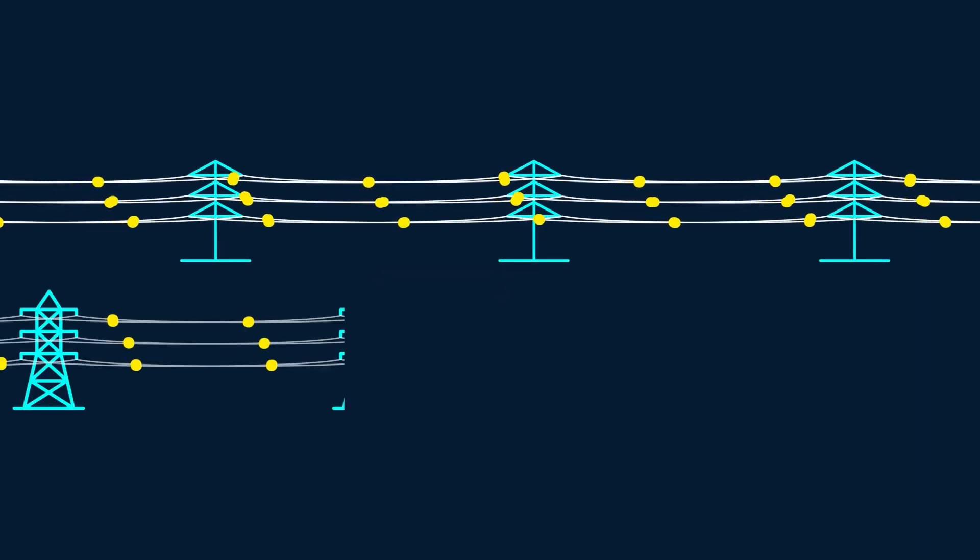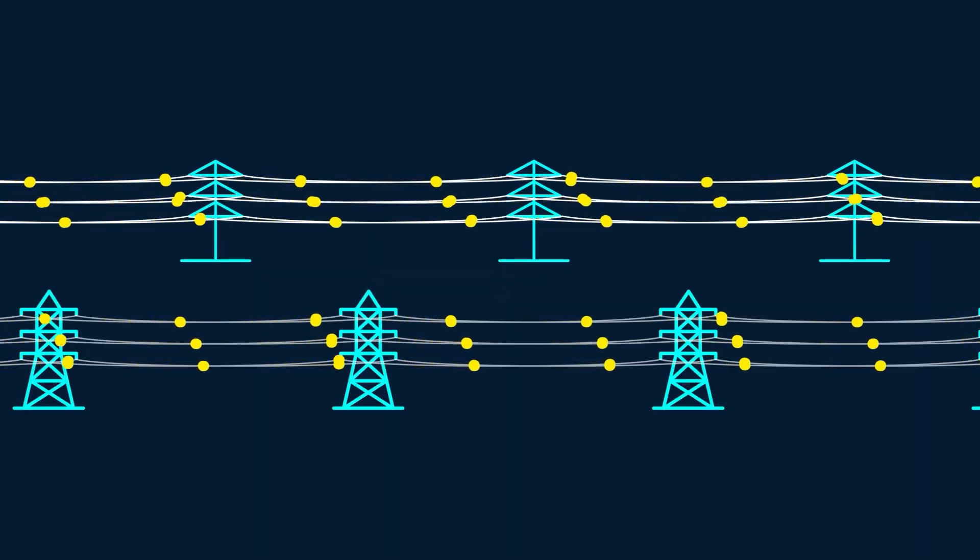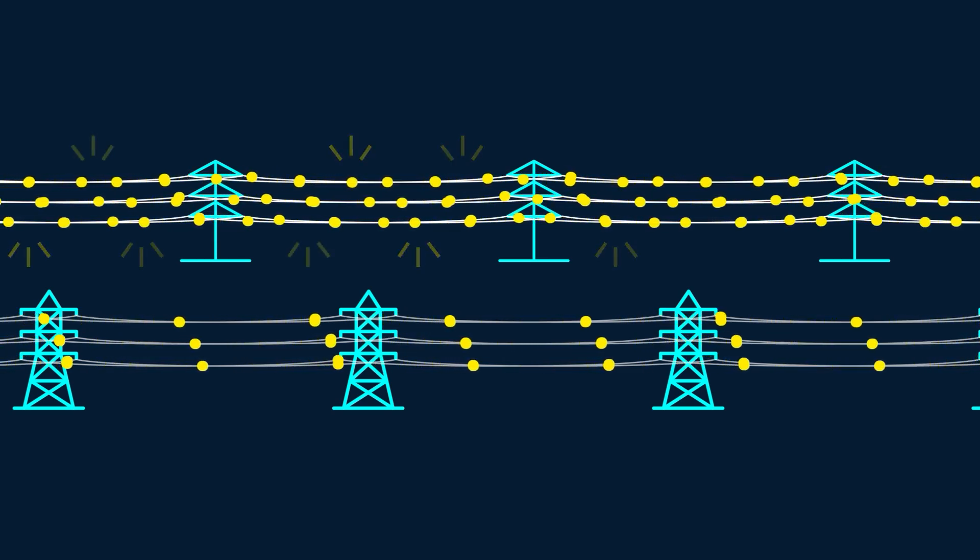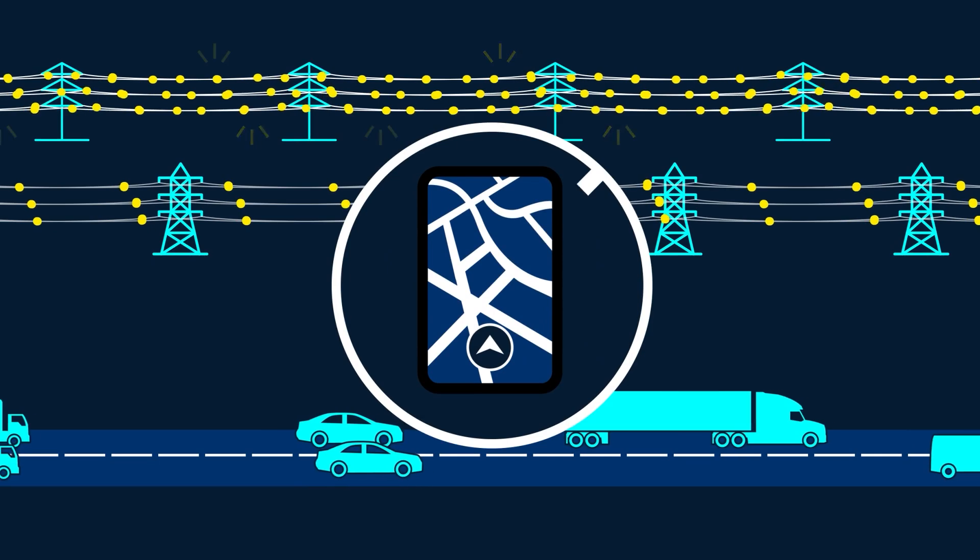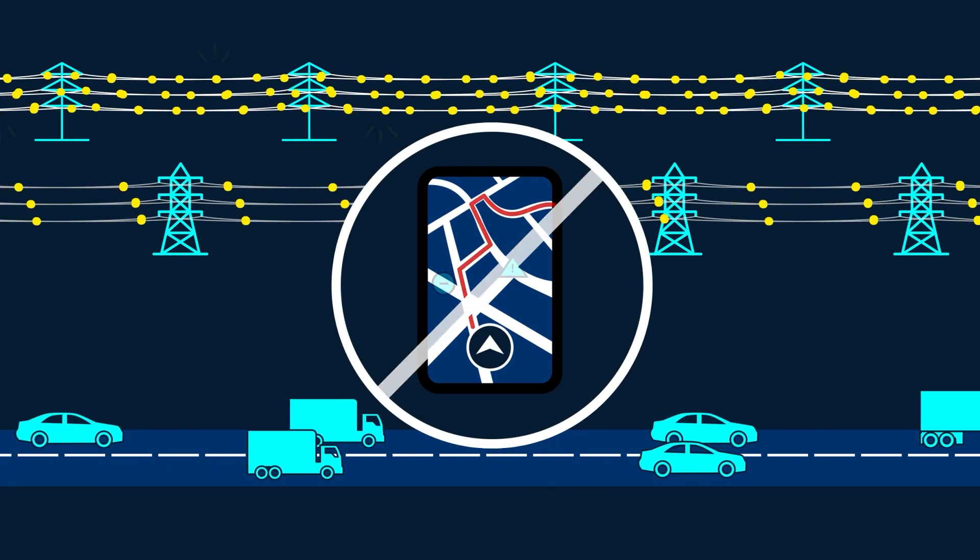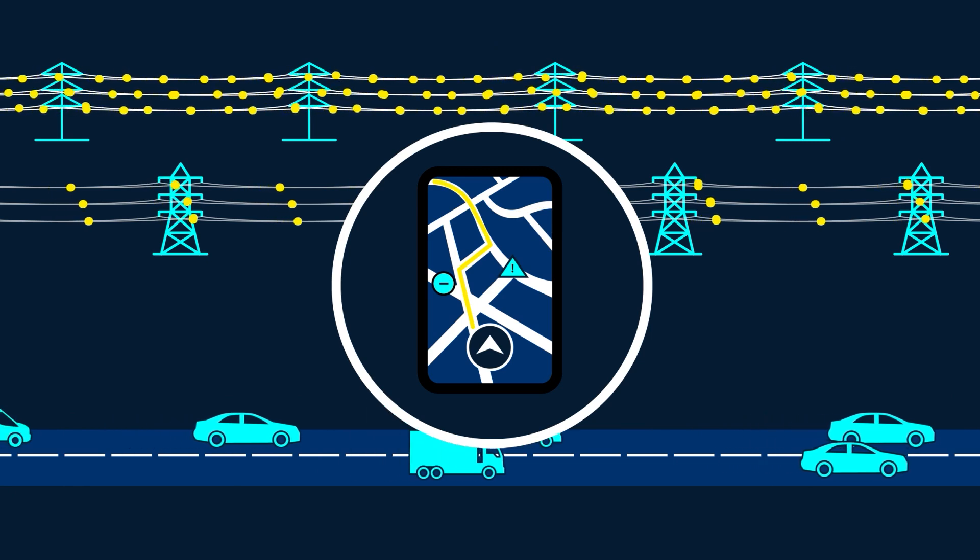That means even if we build a big transmission line, electricity might still travel on small overloaded lines. It's like a driver that doesn't use a navigation app and takes inefficient routes. FACTS are the navigation apps of transmission.